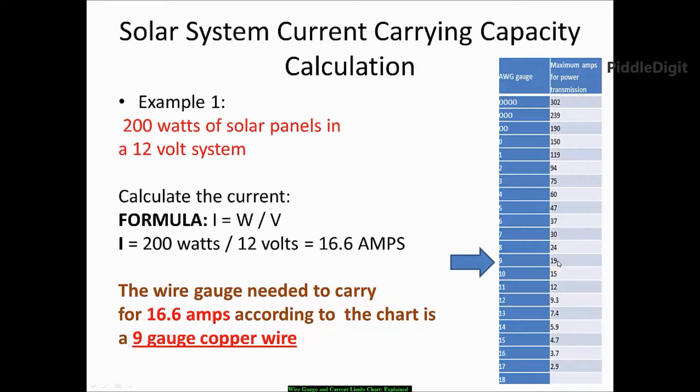I'm going to look at the wire gauge for 19 amps of current. In this case, the wire gauge chart tells me that I need a 9 gauge wire if I plan to deploy a 12 volt system with 200 watts of solar panels. So as you can see right here, the wire gauge needed to carry 16.6 amps according to the chart is indeed a 9 gauge copper wire.